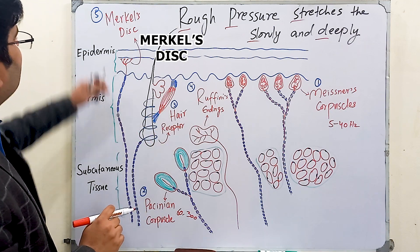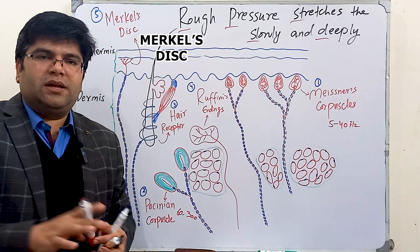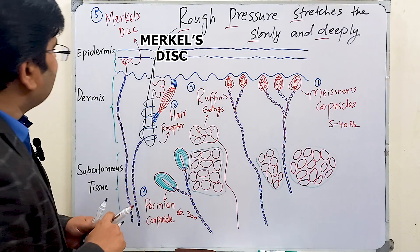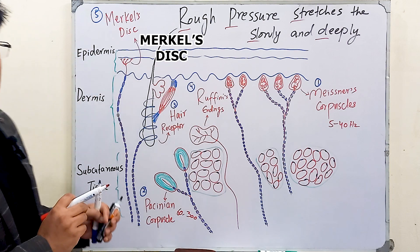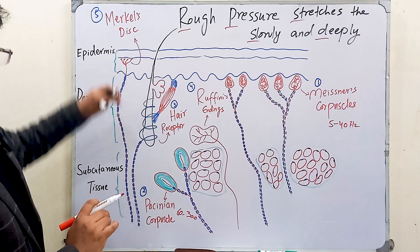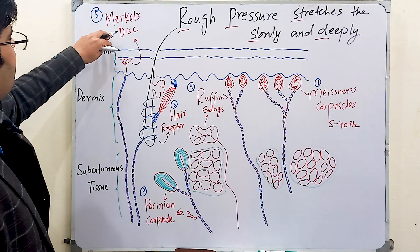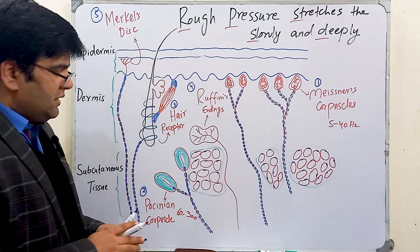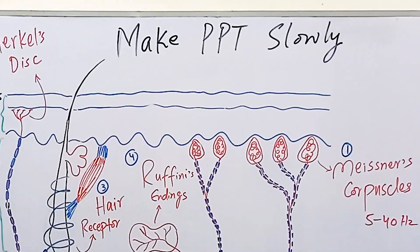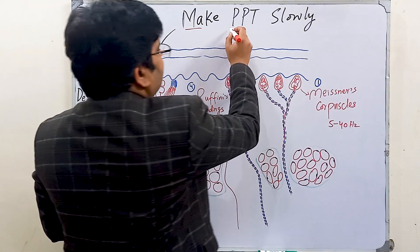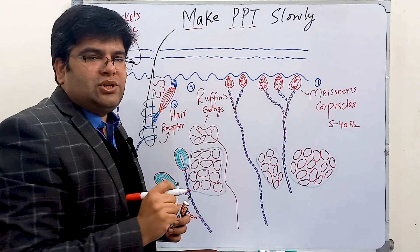We will also talk about Merkel's discs. These are present in the epidermis of non-hairy skin like the palms, soles, and lips. These receptors have small receptive fields, just like Meissner's corpuscles, so they are more densely present in the superficial epidermis. Being superficially located, they are important to detect light touch, light pressure, and the texture of various substances. Merkel's discs, just like Ruffini endings, are also slowly adapting receptors. The mnemonic is: 'Merkel's disc makes PPT slowly' — 'P' for pressure, 'P' for position/fine touch, 'T' for texture, and 'slowly' for slowly adapting.